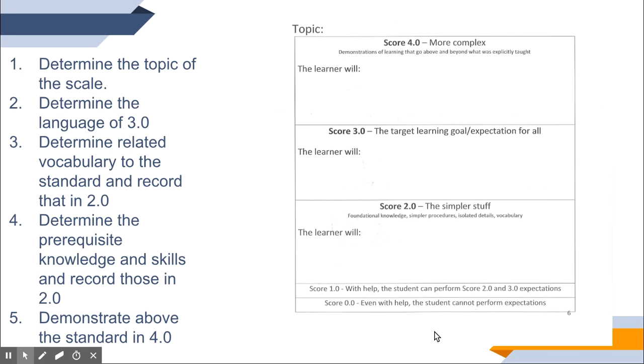The next thing you're going to do is you're going to think about a two and you're going to determine the language for the proficiency of two. And the way that you do that is you look at your three and you think about what prerequisite skills and what prerequisite knowledge do students need before they can do that three.